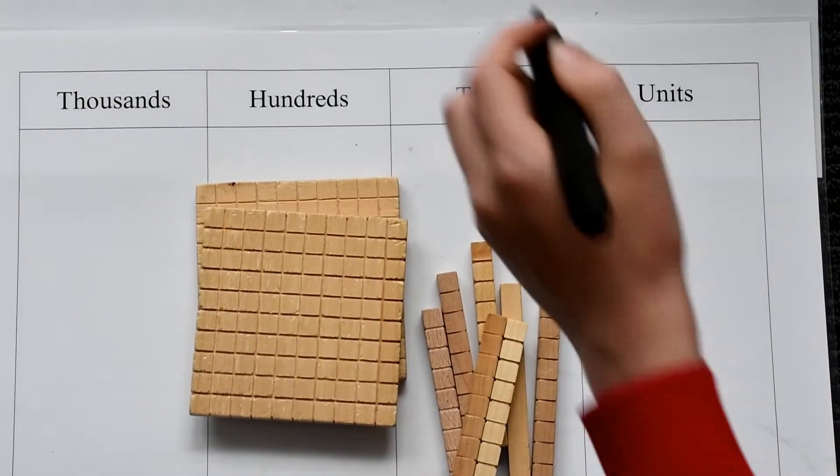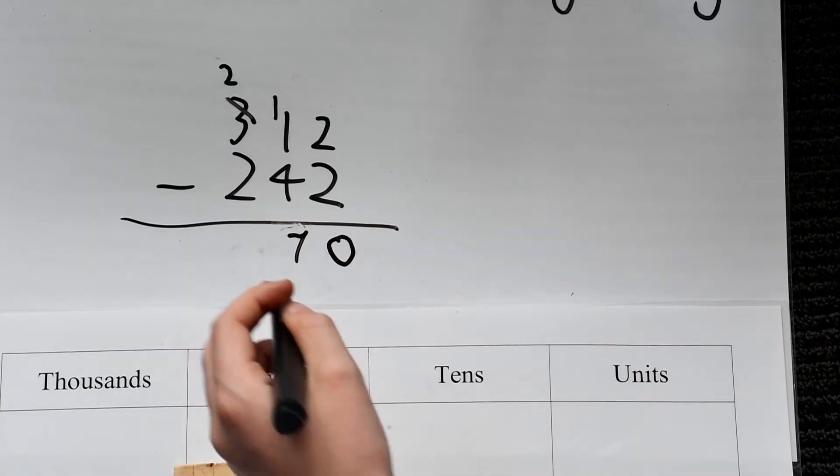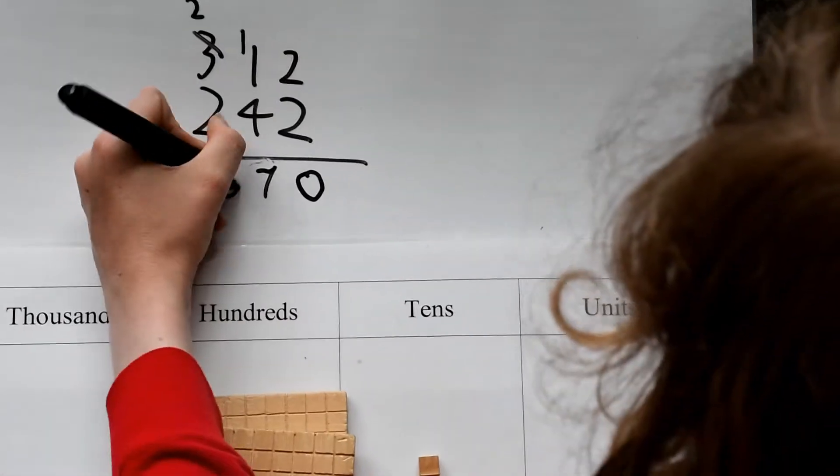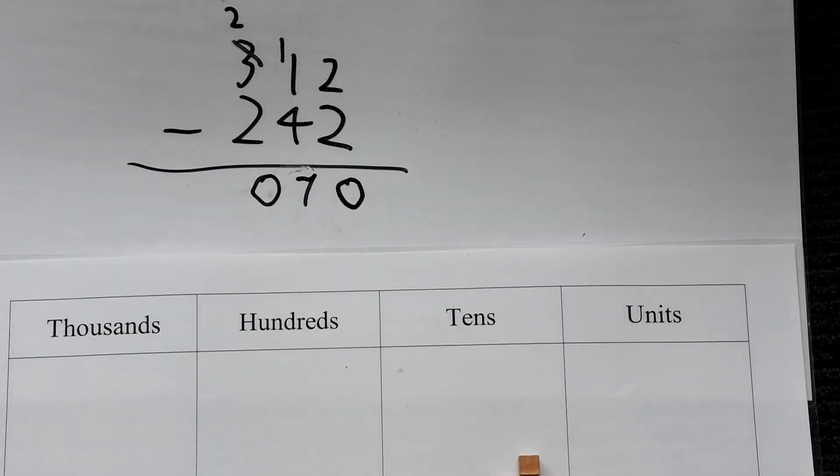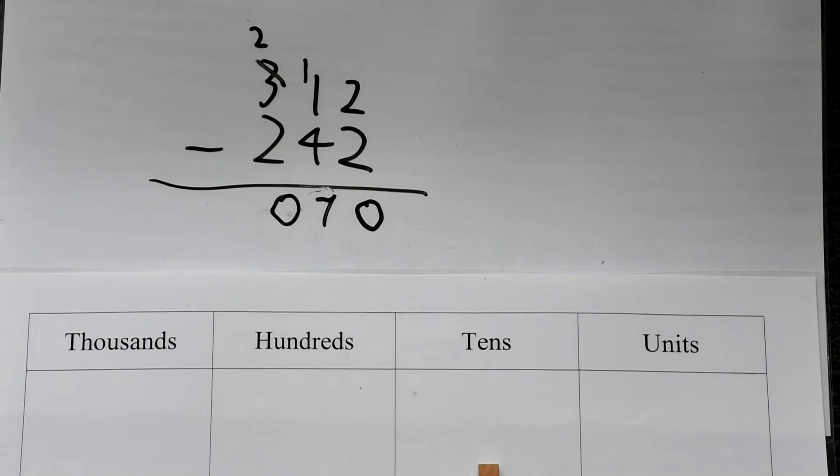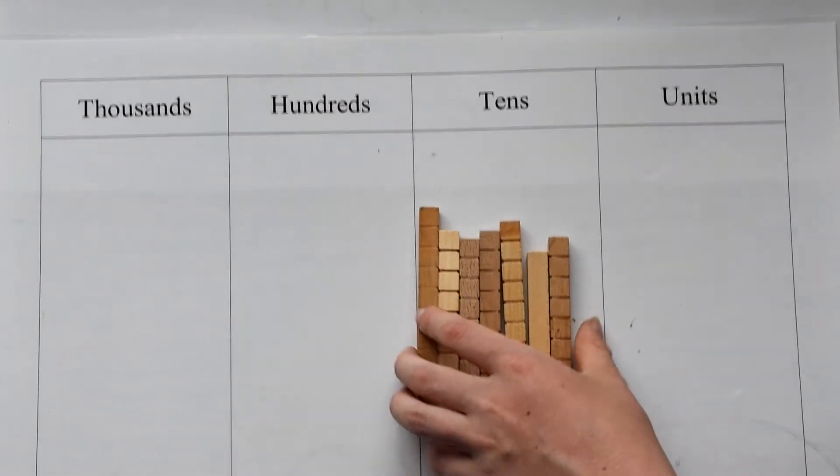Finally we've got 2 minus 2 for the hundreds, which equals 0, so we can take away the 200. Our final answer is 70.